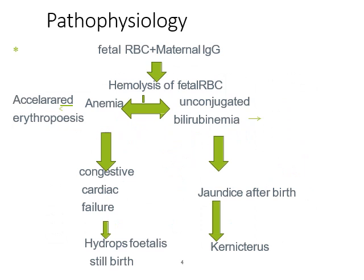Maternal IgG is produced by plasma cells and crosses the placenta barrier to the child. Within the child, it binds to the child's red blood cell surface. When IgG binds to the RBC surface, the Fc fragment can either activate the complement system or cause opsonization, leading to the RBC being engulfed by splenic and hepatic macrophages — resulting in hemolysis. The hemoglobin is broken down into its components, and the heme is converted to biliverdin and then to bilirubin.